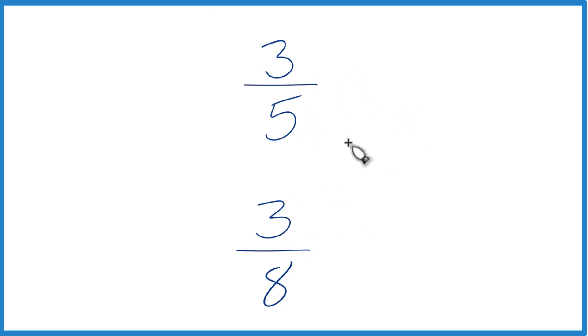We could also find a common denominator, because if the denominator's the same, we just compare the numerators and we'll know.